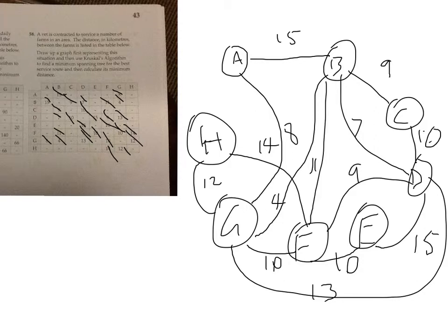Now I'm going to use the nearest neighbor algorithm. We can start at any vertex, so let's start at A. I'll find the smallest edge connected to A — that's 8, going to G. That's the smallest one. Now from G I've got a 4, a 12, a 15. G is now connected, so I'll do the 4.